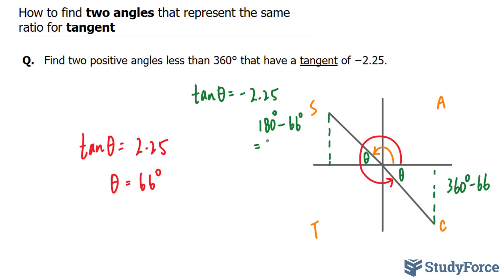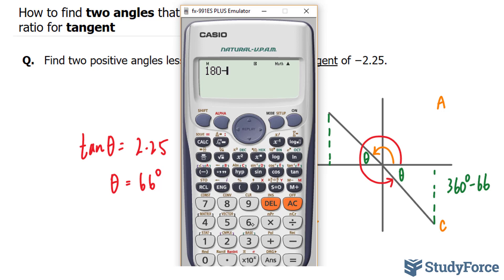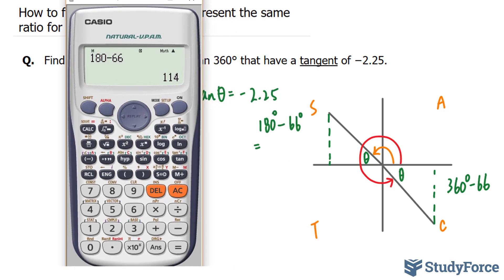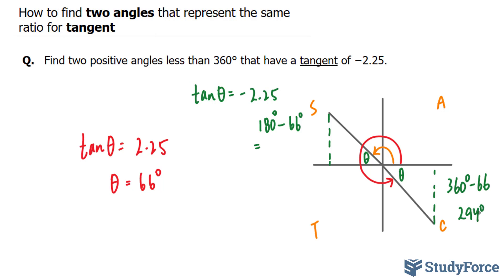This gives us, using our calculator, 180 minus 66 is 114, and 360 minus 66 is 294. So this is 294 degrees and this is 114 degrees.